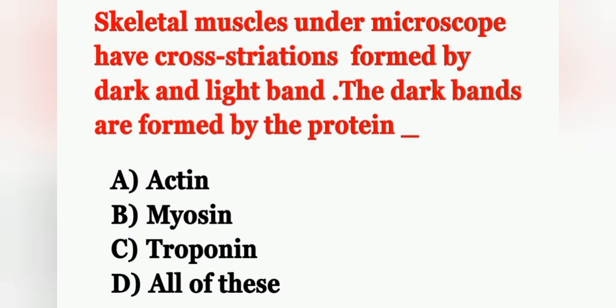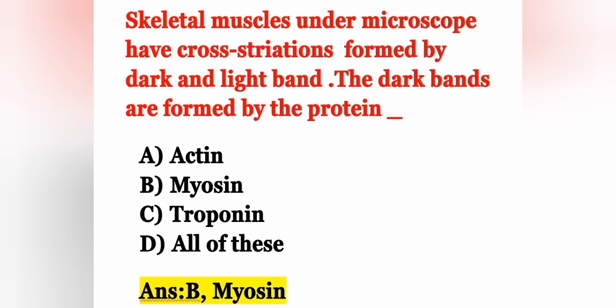Next question (2016 ESIC exam): Skeletal muscles under a microscope have cross-striations formed by dark and light bands. The dark bands are formed by the protein — Option A: actin, Option B: myosin, Option C: troponin, Option D: all of these. The correct answer is Option B, myosin. In skeletal muscles, thick or dark filaments are made by myosin, and thin filaments are made by actin.